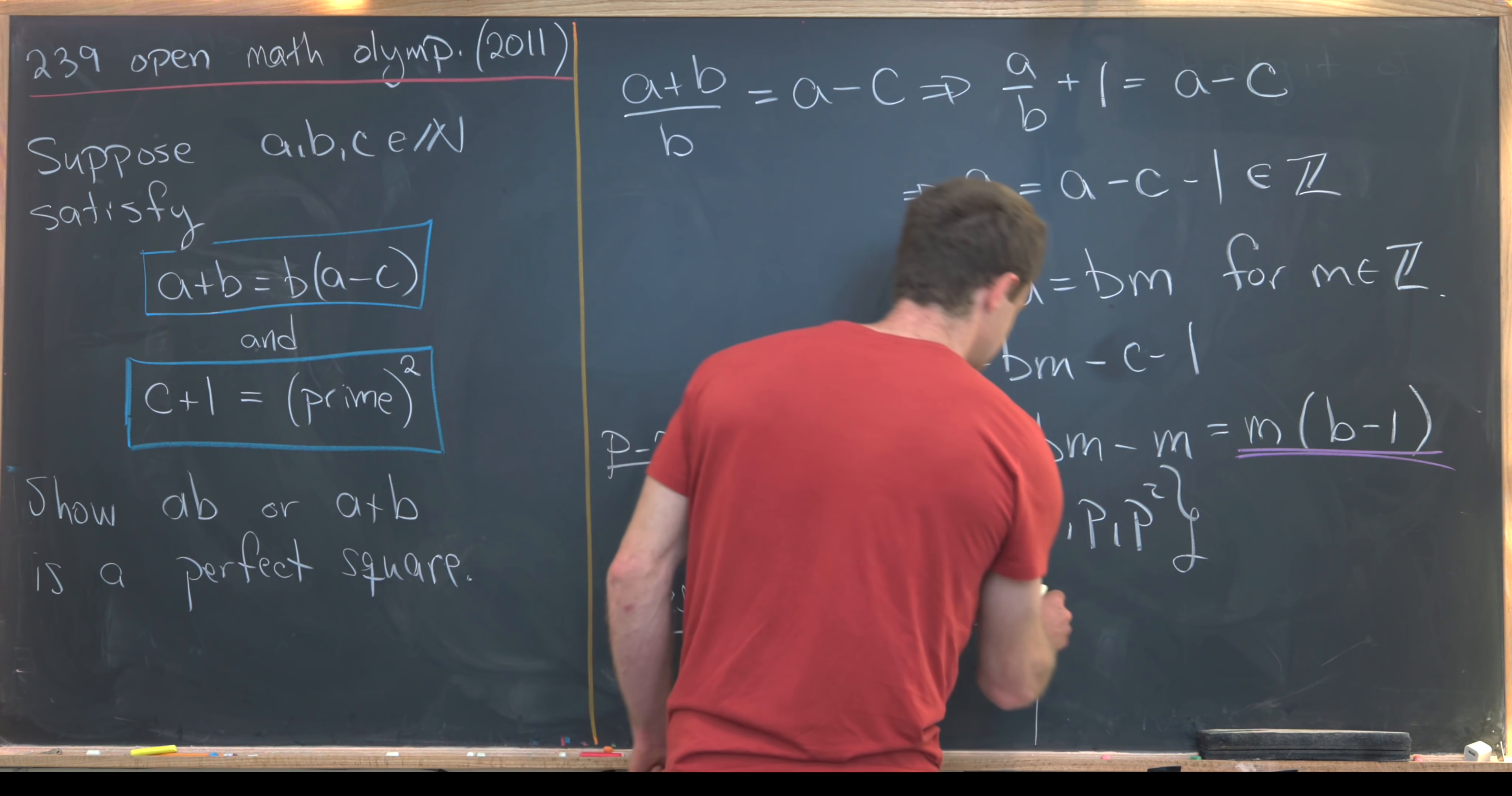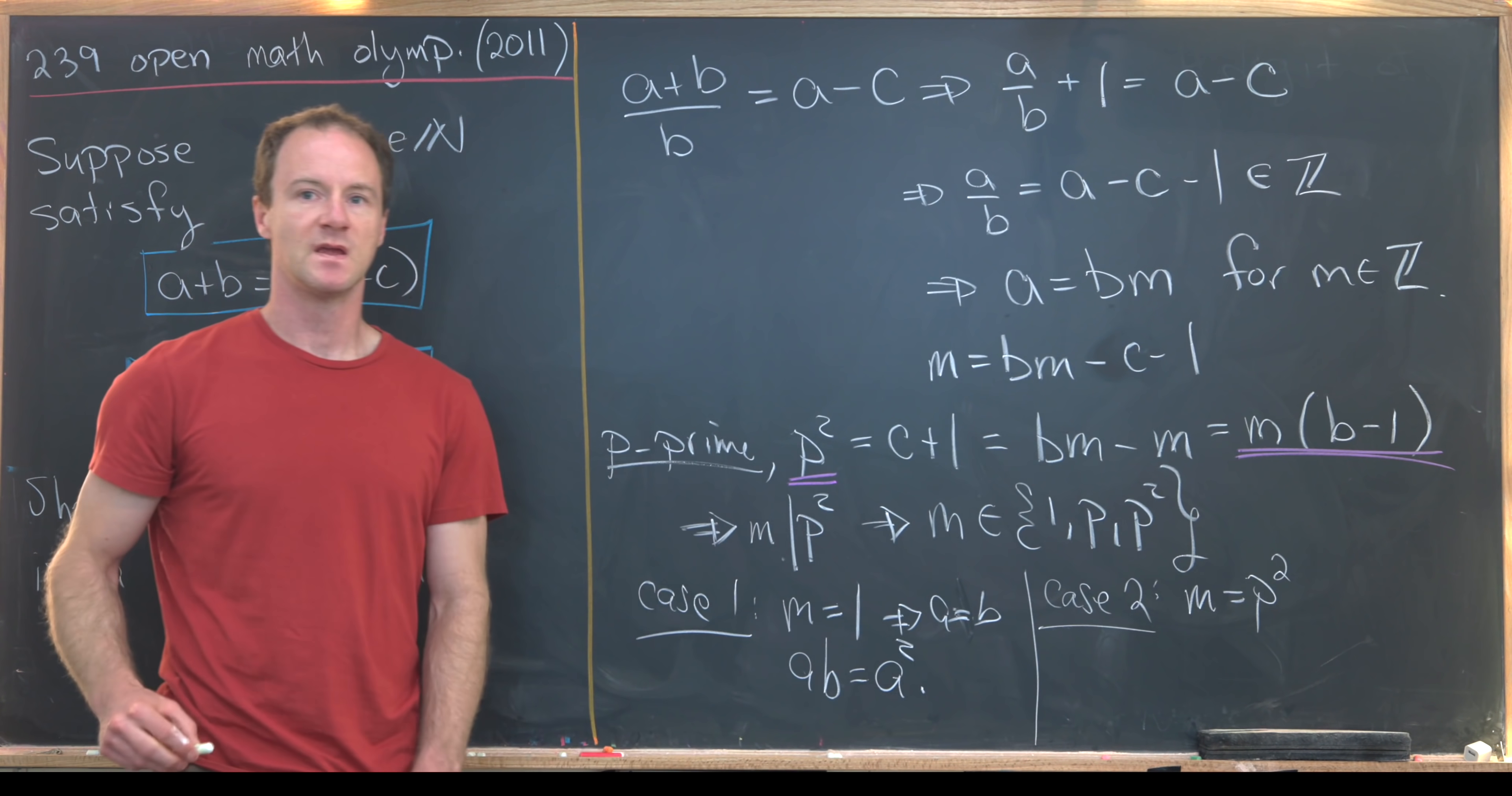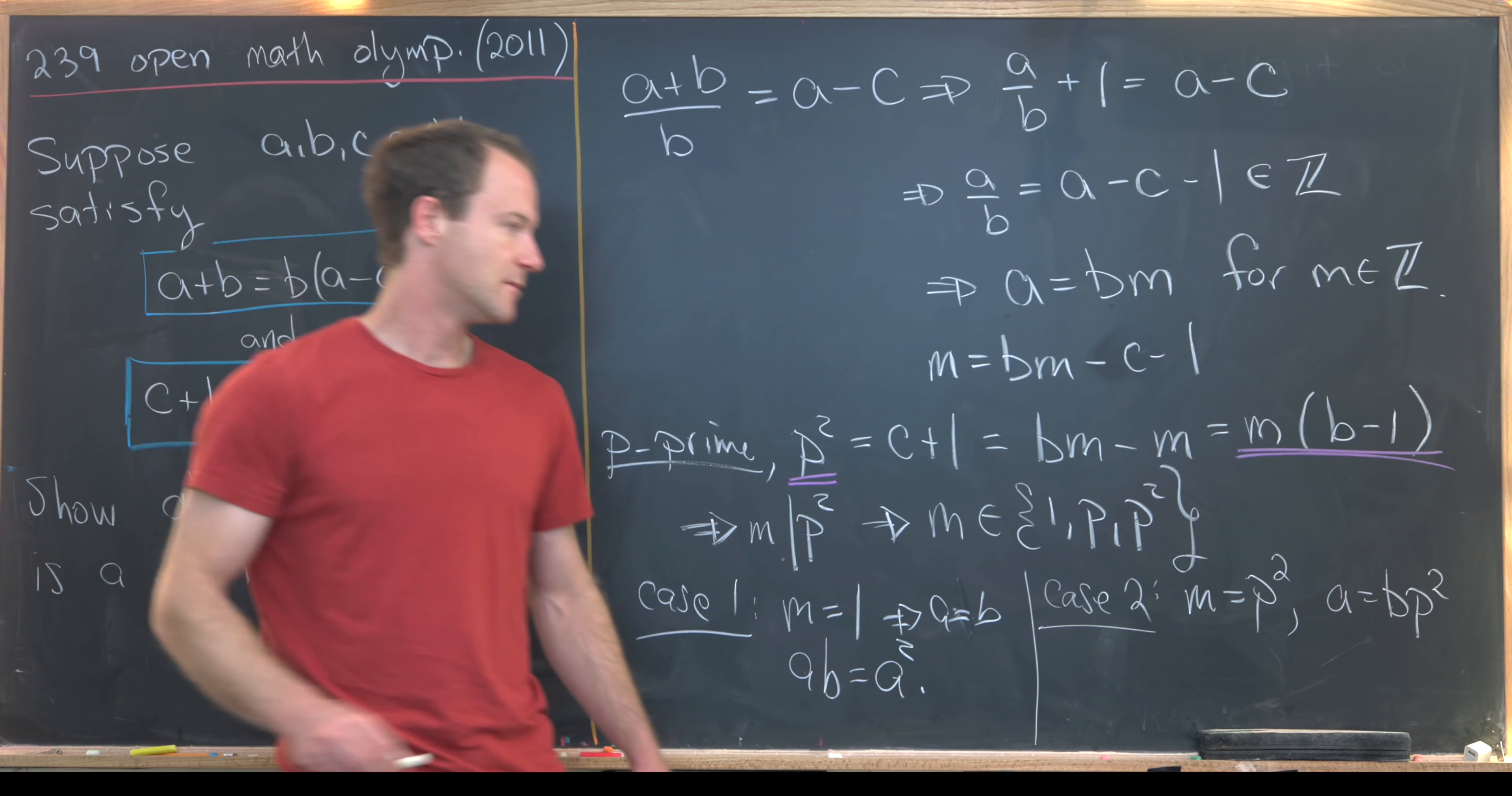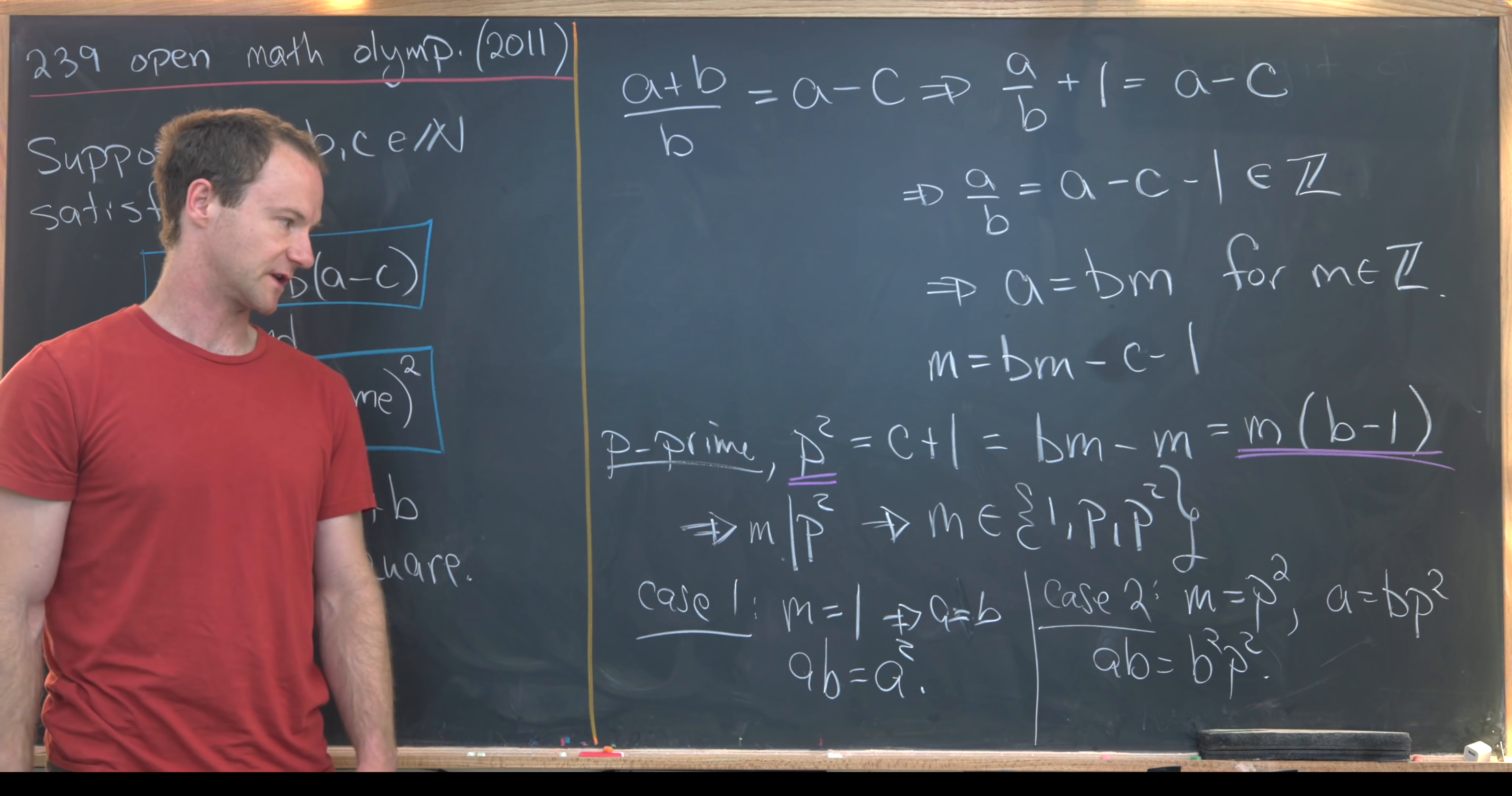Now let's look at the second case. Case two is when m equals p². But that's almost as easy. That tells us that a = bp². But then that tells us that ab = b²p², which is also a perfect square.